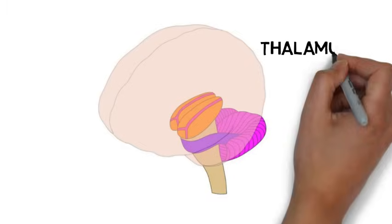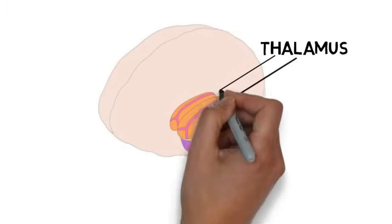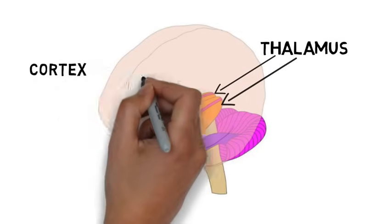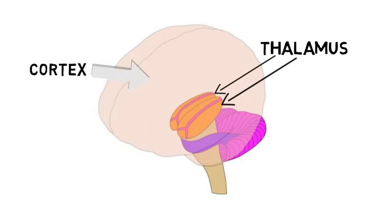There is a thalamus in each cerebral hemisphere just above the brainstem. The thalamus is often described as a relay station because a great deal of information that precedes the cerebral cortex first stops in the thalamus before being sent on to its destination.